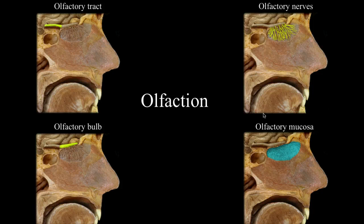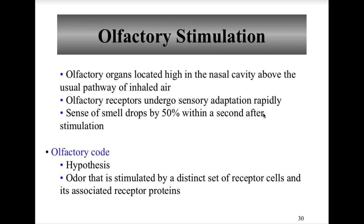Olfactory stimulation theory states that smell stimulates many receptors, and a certain combination equals specific smells. Sometimes sniffing is needed to bring odorant molecules up to the olfactory epithelium. The sense of smell drops by 50% within a second after stimulation. Olfactory receptors are continually being replaced by stem cells. The olfactory code hypothesis states that an odor is stimulated by a distinct set of receptor cells and its associated receptor proteins.